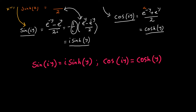By convention, we denote variables in a formula as x, so replacing y by x we get the standard form: sin(ix) = i·sinh(x) and cos(ix) = cosh(x). These are the connecting formulas between circular and hyperbolic functions.